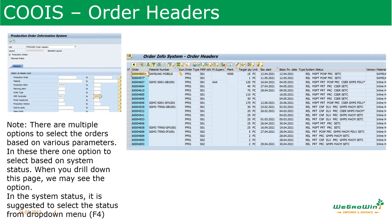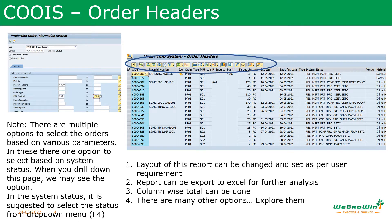After selecting the parameters and executing, we come into the report. The order header shows the order number, the material being produced, the order type, the MRP controller, the basic start date, basic finish date, scheduled start and finish dates, and actual start and finish dates. It also shows system status, target quantity, and the plant where it is being produced. The layout can be changed as needed, and the report can be exported to Excel for further analysis. Summation on any column can also be done. This is a very important report — each production user should explore it to the maximum extent.